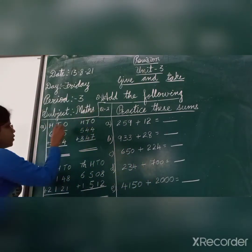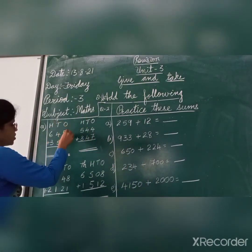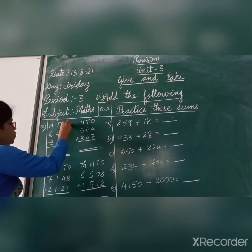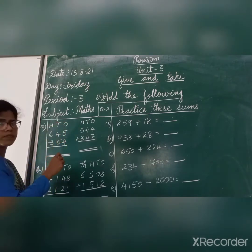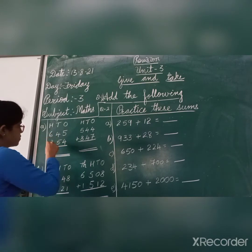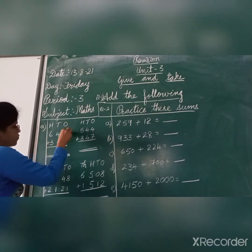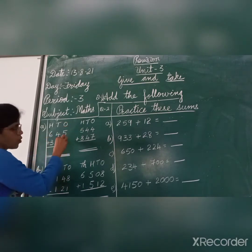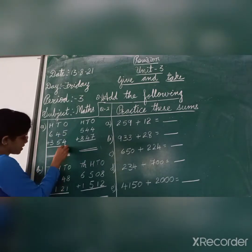First, add the following. What you have to do? Meditation. One, one, ten — you have to think of which place. One place we have to do first. 5 plus 4, 5 plus 4 is 9.